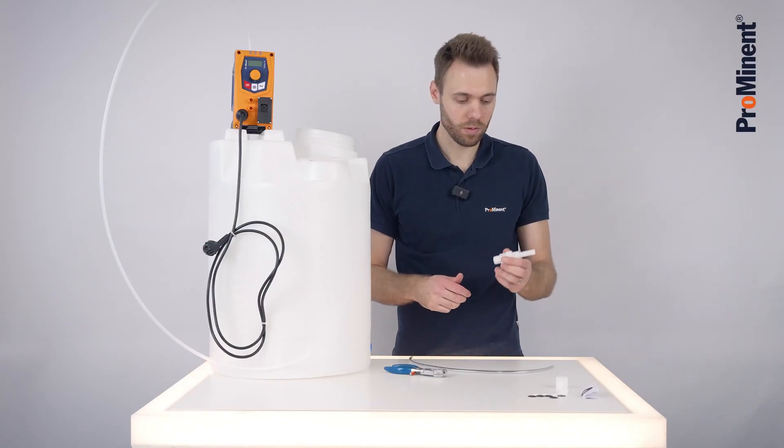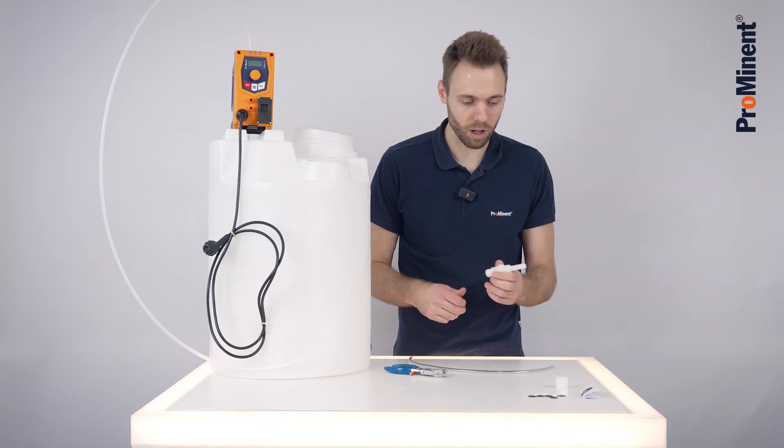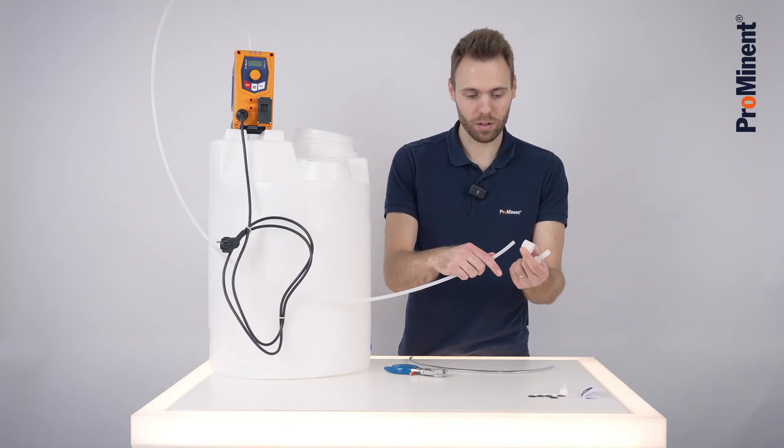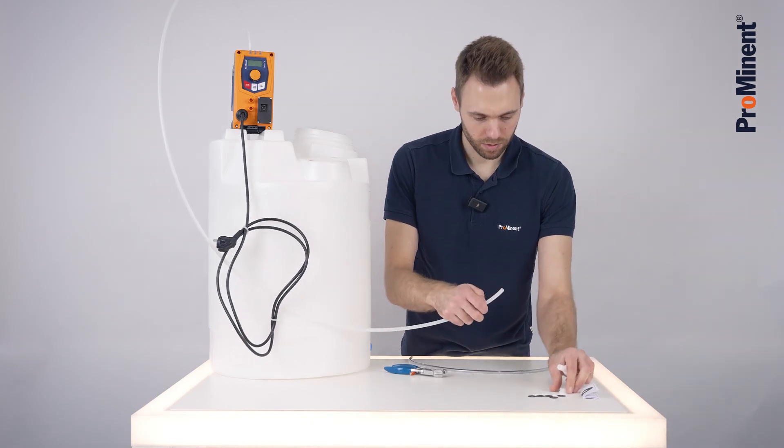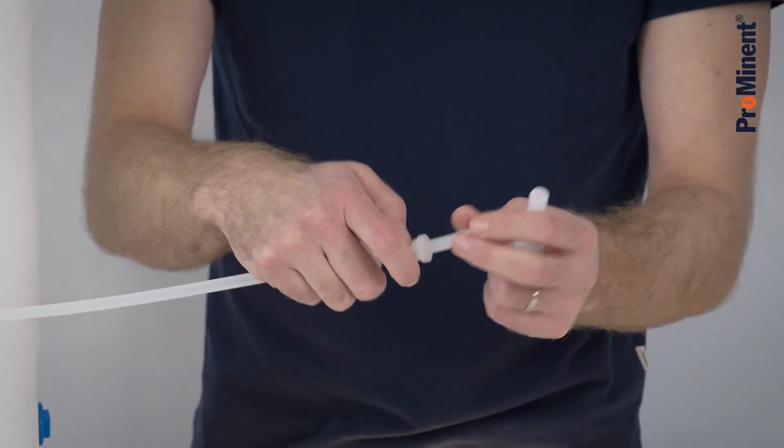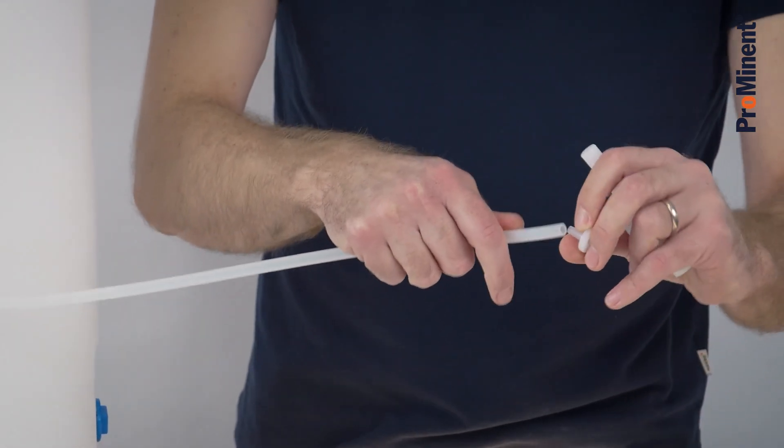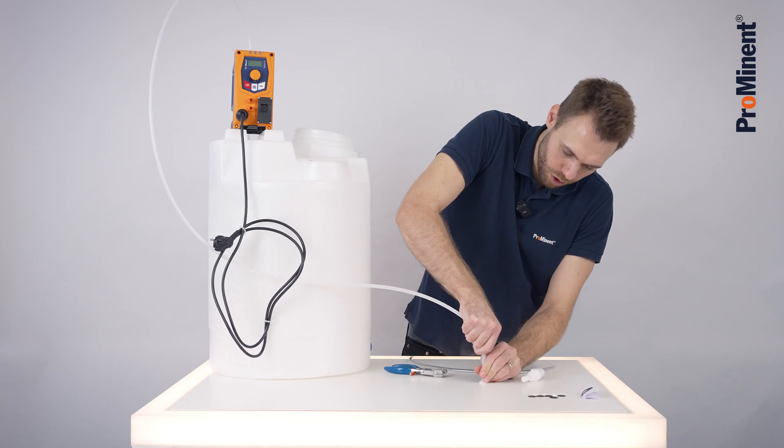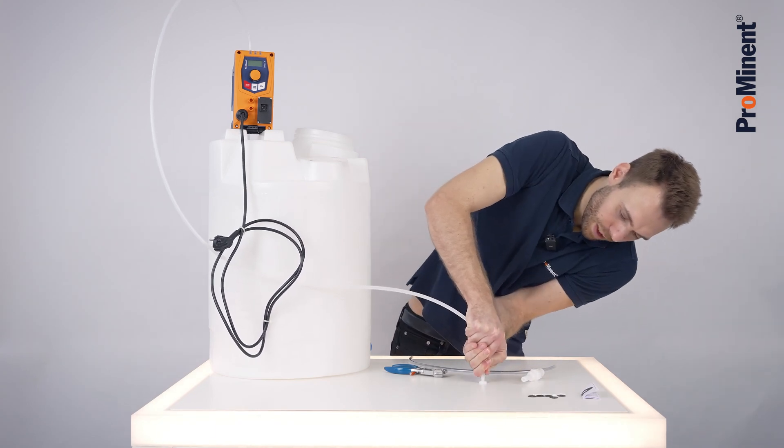On the pressure side we connect the injection valve. Same procedure. On the discharge side we connect and push the nozzle properly on the PE tube.